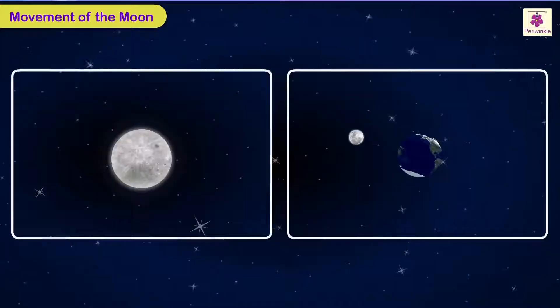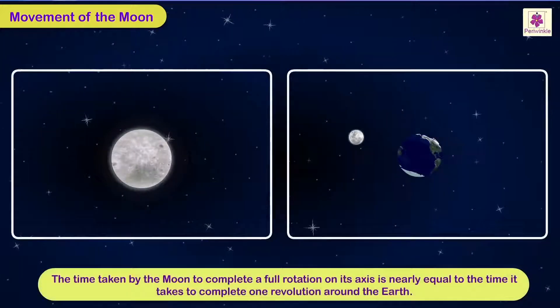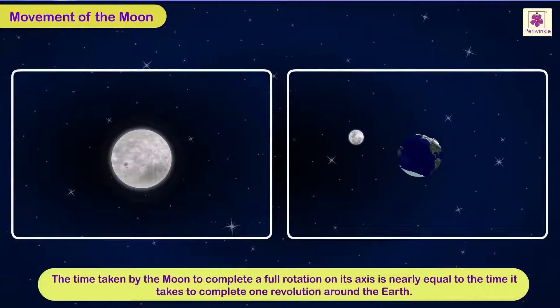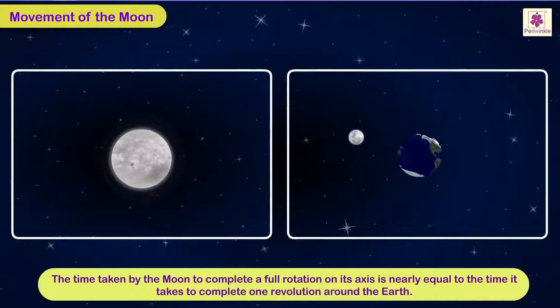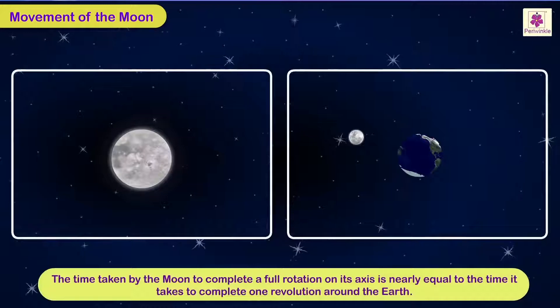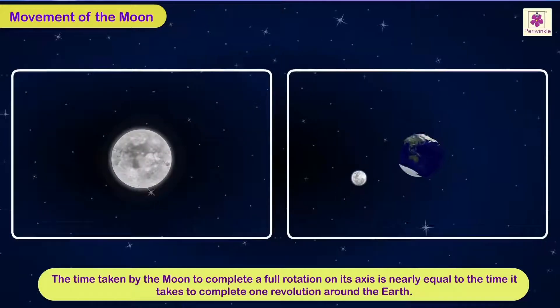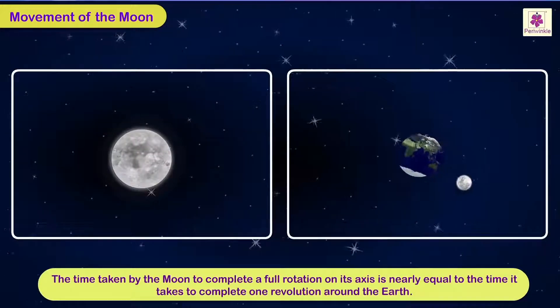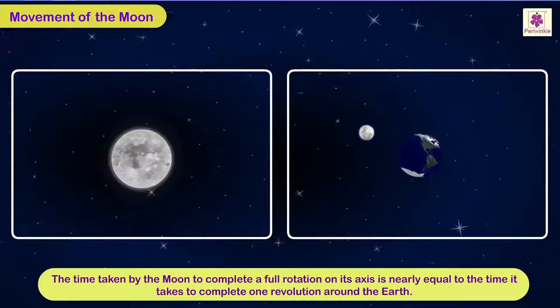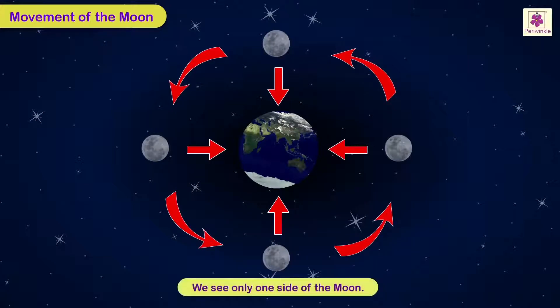It is also important to note that the time taken by the Moon to complete a full rotation on its axis is nearly equal to the time it takes to complete one revolution around the Earth. That is why we see only one side of the Moon.